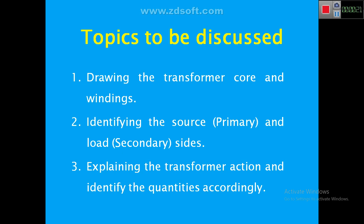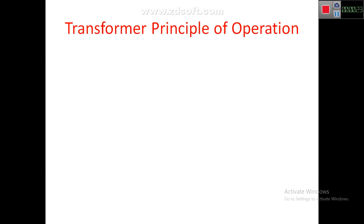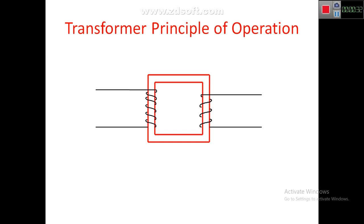So this is the transformer principle of operation diagram. This is the transformer core and these two are the windings. The first winding, which is connected to supply, is called the primary winding.